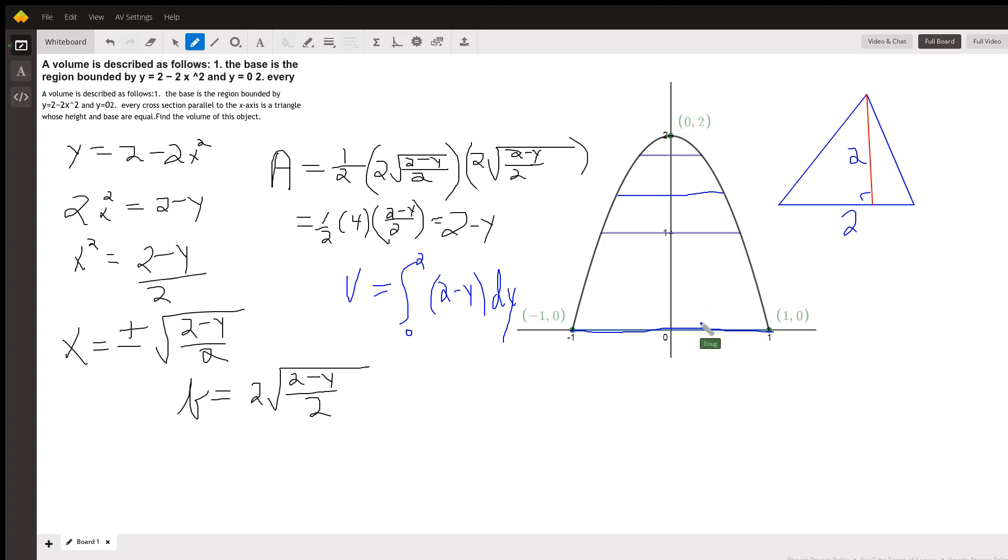We would like to find a formula for the area of each of these triangles, depending on where we are along the y-axis between 0 and 2. So here's the original function. I need to get the x in terms of y so that I can get this distance right here. And then if I double that, I'll have a formula for the base.